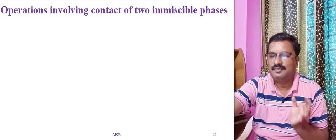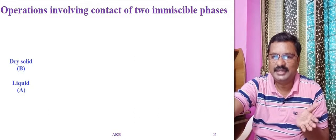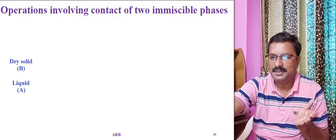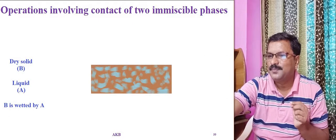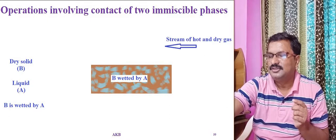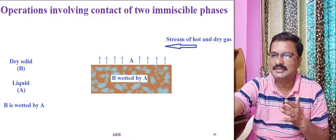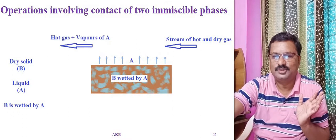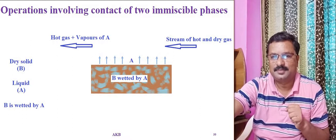In the schematic for drying, you have dry solid B wetted by liquid A. This is contacted with a stream of hot and dry gas. The moisture — vapors of A — gets evaporated and added to the stream of hot gas, which removes those vapors. Finally, the wet solid gets dried.